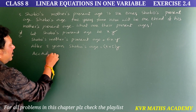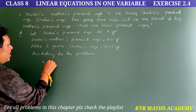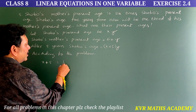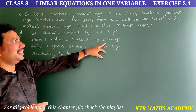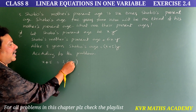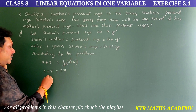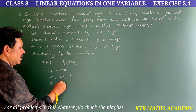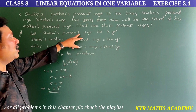According to the problem, X plus five is equal to one third of Shobo's mother's present age. Shobo's mother's present age is six X, and one third of six X — the three cancels into six two times — so X plus five equals two X. Therefore five equals two X minus X, which gives five equals X, so X equals five.